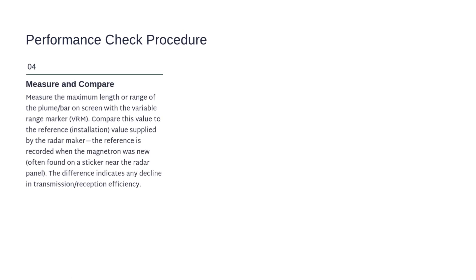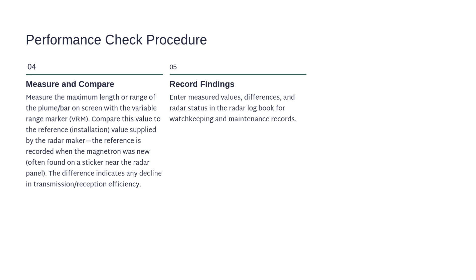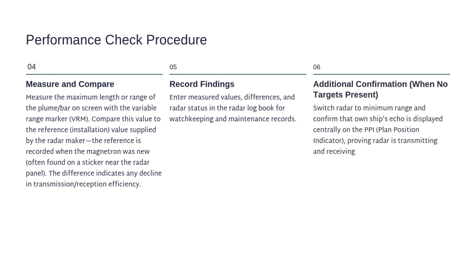Measure and compare. Use the Variable Range Marker, or VRM, to measure the maximum length of that plume or bar. Compare it with the reference value given by the radar manufacturer — that value was recorded when the magnetron was new, and it's usually found on a sticker near the radar panel. The difference between the two readings shows how much the radar's efficiency has changed. Record all measured values, differences, and the radar's condition in the radar logbook. For extra confirmation, switch to the minimum range and check that your own ship's echo appears at the center of the screen, confirming the radar is transmitting and receiving correctly.